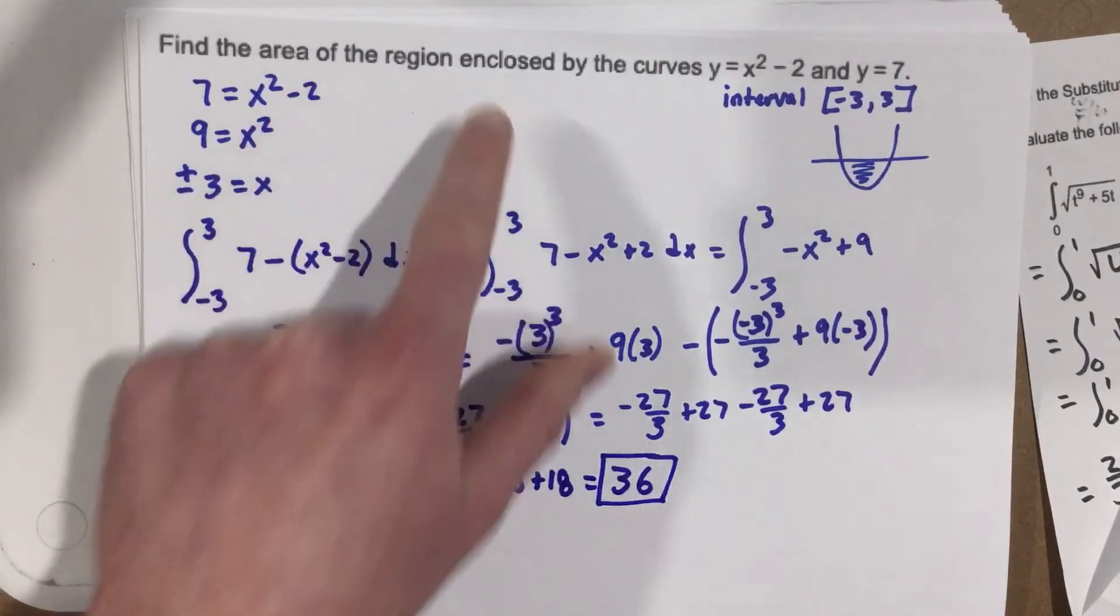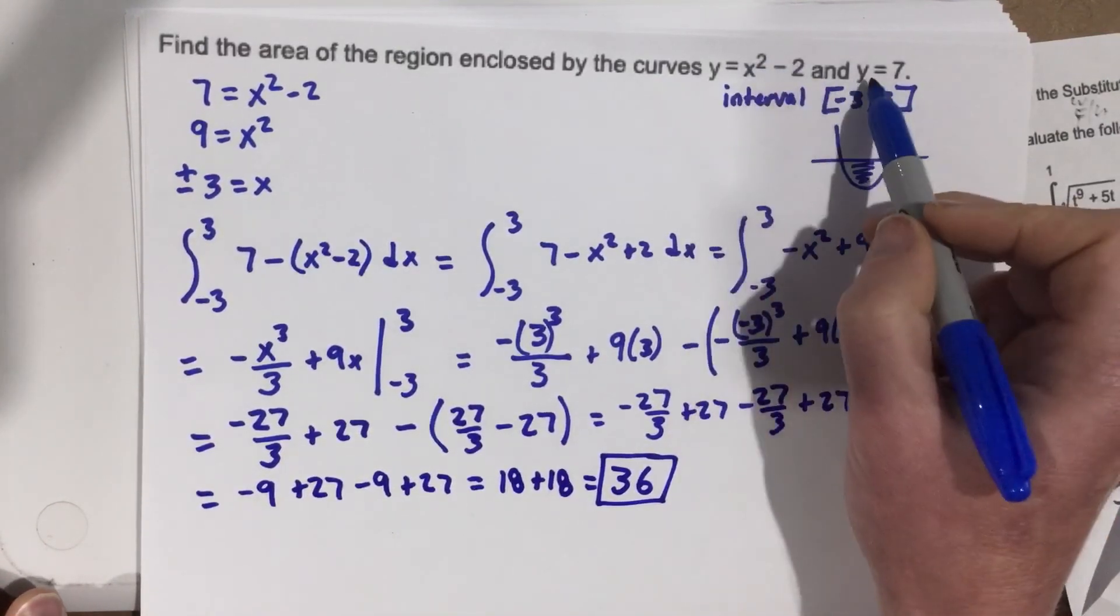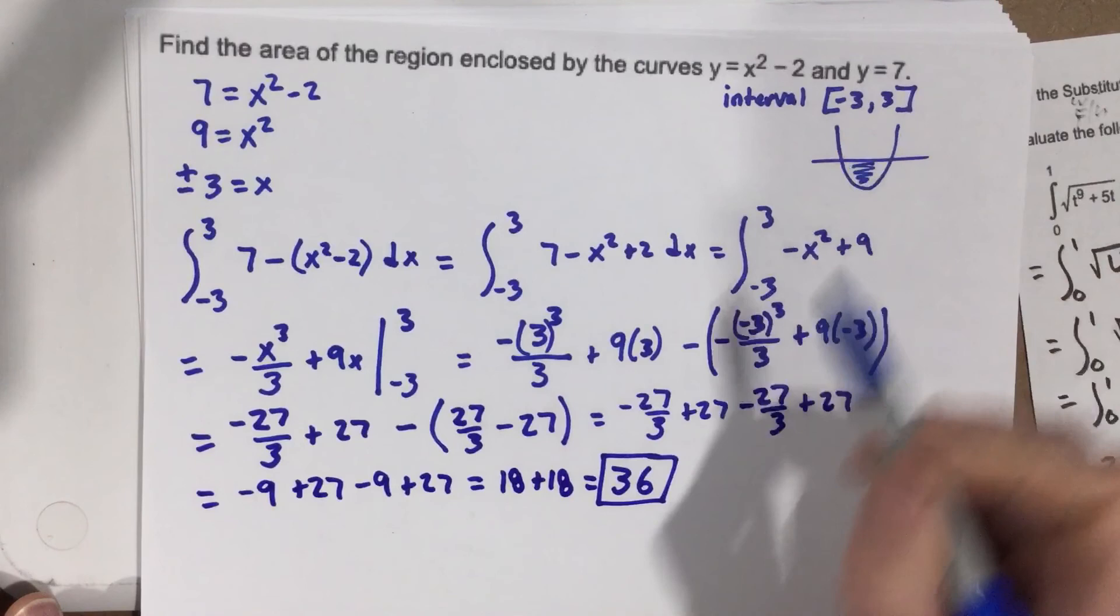So the area of the region enclosed by the curves, y equals x squared minus 2, a parabola, and y equals 7, a horizontal line, the area of that is 36.